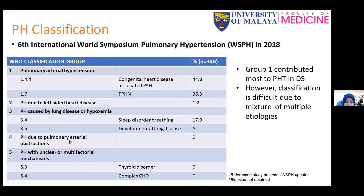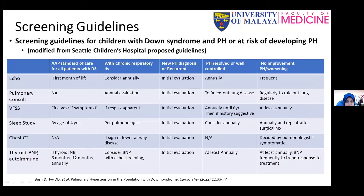Down Syndrome is mostly attributed to Group 1, but other groups may be underreported because a single patient can have multiple comorbidities such as lung development disorders or thyroid disorders. Screening guidelines for Down Syndrome with or at risk of developing pulmonary hypertension are quite limited with no consensus-accepted guideline. A recent publication by the Pulmonary Hypertension Association suggests a comprehensive approach including echocardiography screening in the first month of life, screening for swallowing disorders in symptomatic children, screening for sleep breathing disorders by age four years, and thyroid metabolic screening.